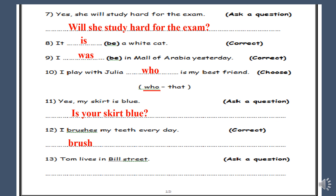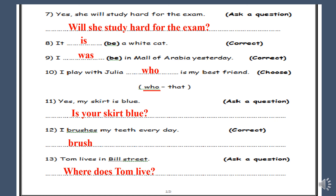Number thirteen: Tom lives in Belle Street. Ask a question. The underlined word is 'Belle Street', so this is a place, and the verb 'lives' indicates present simple. I will start with a question word — asking about a place, so: 'where'. After 'where', the helping verb 'does', then the subject 'Tom', then the verb in the infinitive: Where does Tom live?